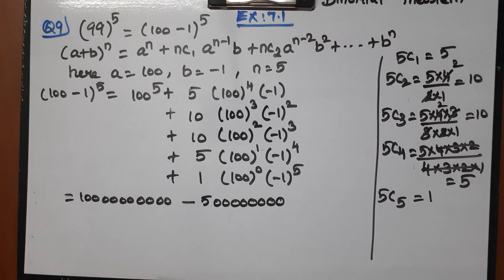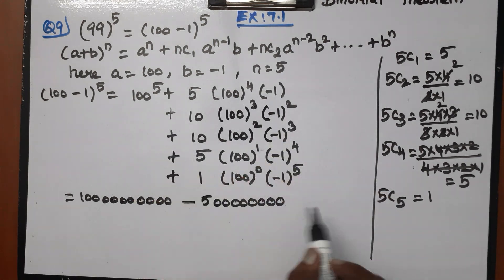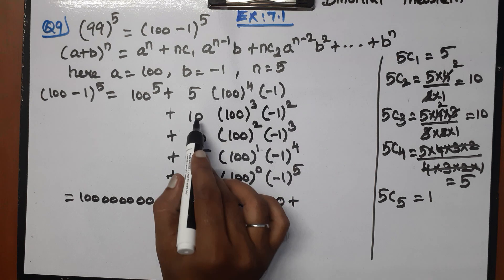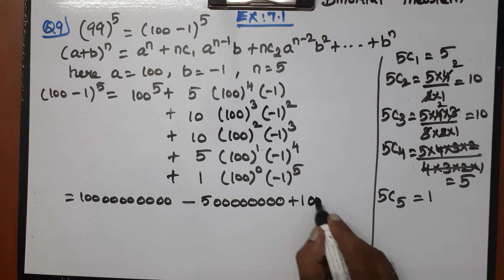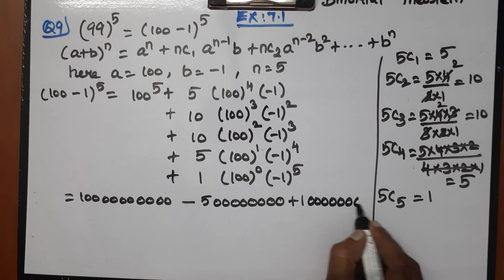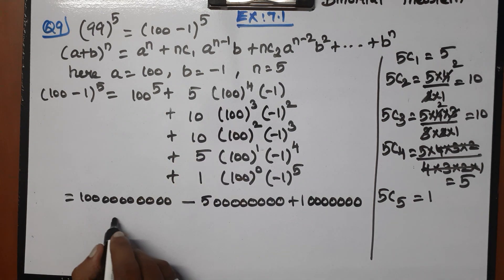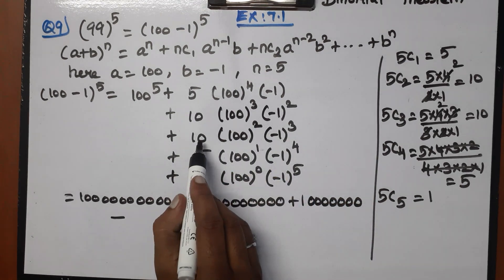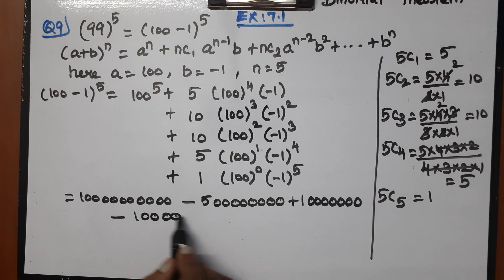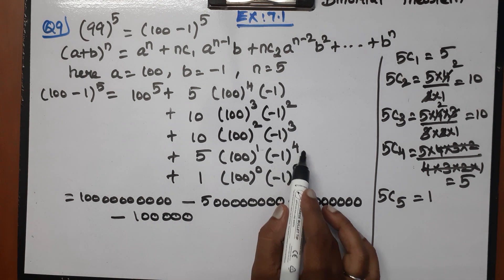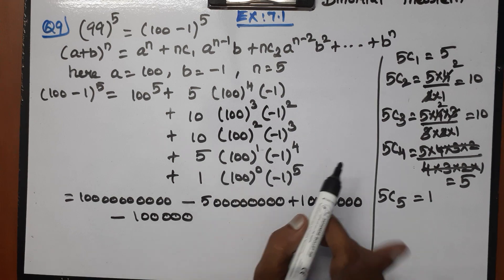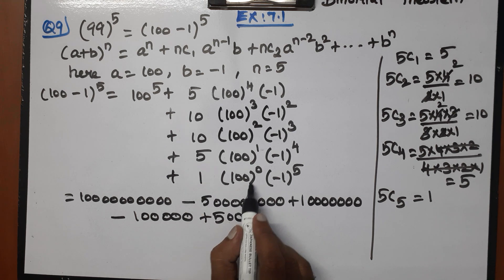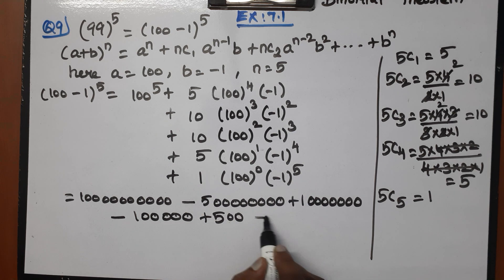Substituting, the terms become: 100 power 5, minus 5 times 100 power 4, plus 10 times 100 cubed, minus 10 times 100 squared, plus 5 times 100, minus 1. That gives 10,000,000,000 minus 500,000,000 plus 10,000,000 minus 100,000 plus 500 minus 1.